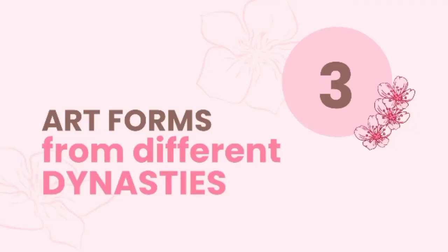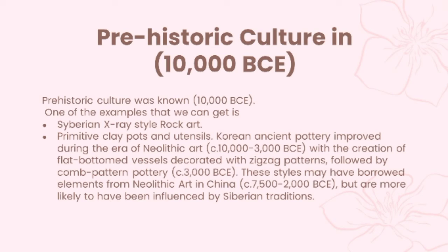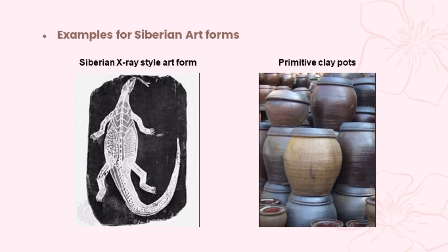With that being said, let us proceed with our third and last objective: the art forms from different dynasties. Archaeological evidence indicates that people came to Korea from Siberia via Manchuria during the Late Stone Age. The Korean Peninsula contains numerous traces of prehistoric art and artifacts dating back to Paleolithic culture. Siberian X-ray-style rock art has been found near the southeastern coast of Korea, along with a range of primitive clay pots and utensils. Korean pottery improved during the era of Neolithic art, with the creation of flat-bottom vessels decorated with zigzag patterns followed by comb-pattern pottery. These styles may have borrowed elements from Neolithic art in China, but are more likely to have been influenced by Siberian traditions.